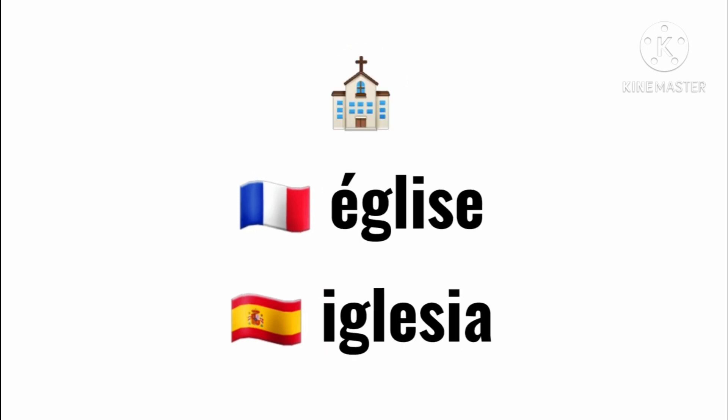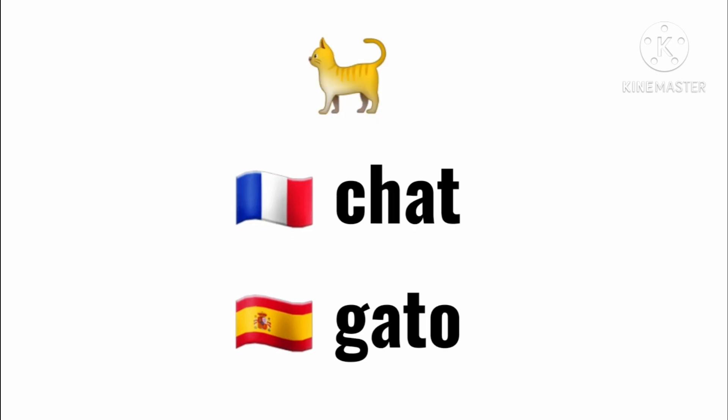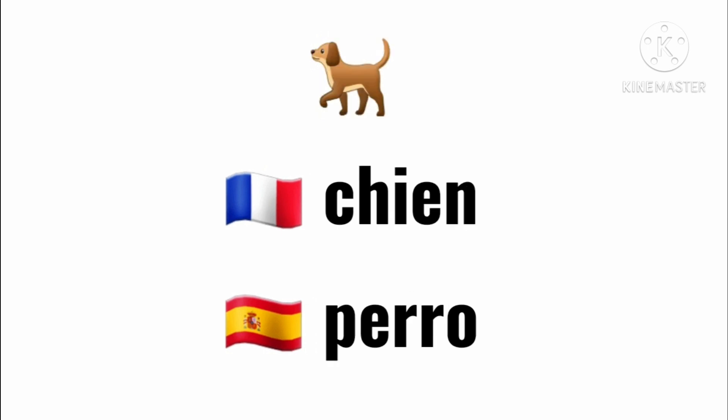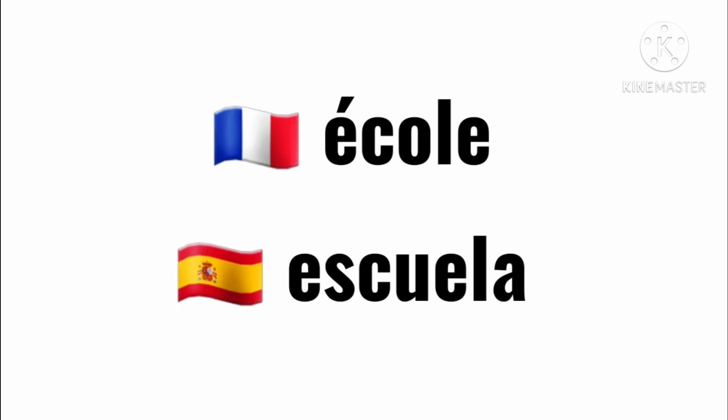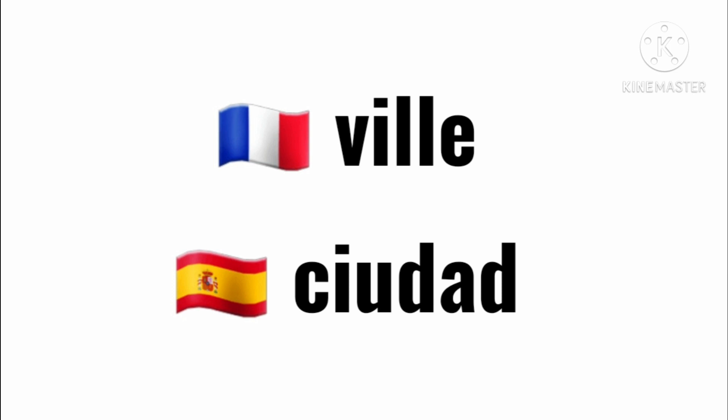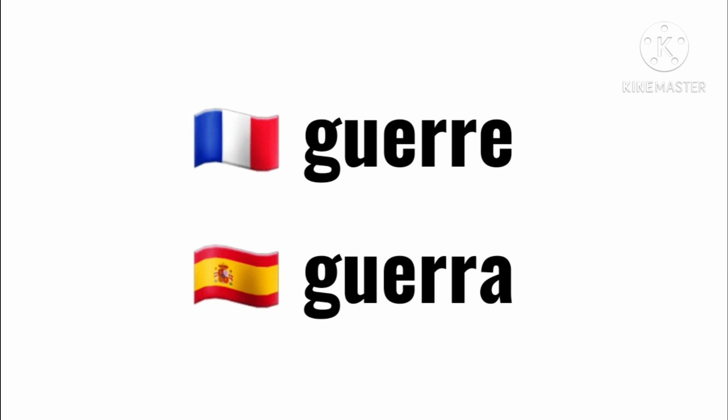Sun in French is 'soleil' and in Spanish it's 'sol'. A tree in French is 'arbre' and in Spanish it's 'árbol'. A church in French is 'église' and in Spanish it's 'iglesia'. In the French language a cat is 'chat' and in Spanish it's 'gato'. A dog in French is 'chien' and in Spanish it's 'perro'. If you go to school in France you go to 'une école' and in Spain you go to 'una escuela'.